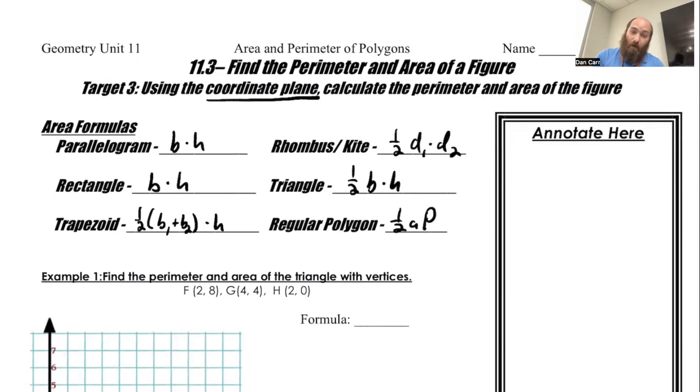Now, we're probably not going to do a lot of regular polygons on here, so I don't think we have to worry about that too much. But the rest of these, the key is identifying each of these things. So you'll be able to find what is the base and what is the height of a triangle.